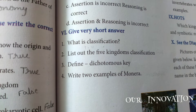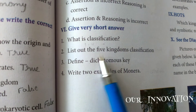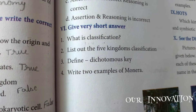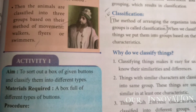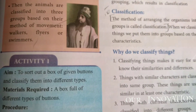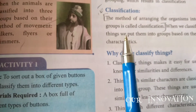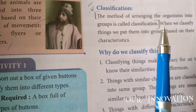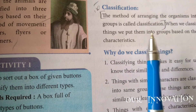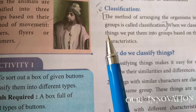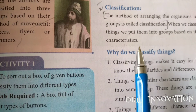Roman numeral 6: give very short answers. First question: what is classification? Refer page number 73. The method of arranging organisms into groups is called classification. This is a short, single-point answer.